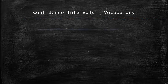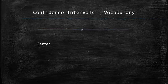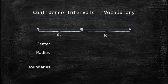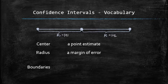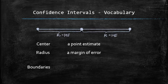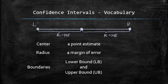Let's recall the properties of an interval. An interval has the center, the radius, and the left and right boundaries. When constructing an interval, it is common to use a point estimate as the center. The radius is usually called the margin of error. And the boundaries are referred to as lower and upper bounds.